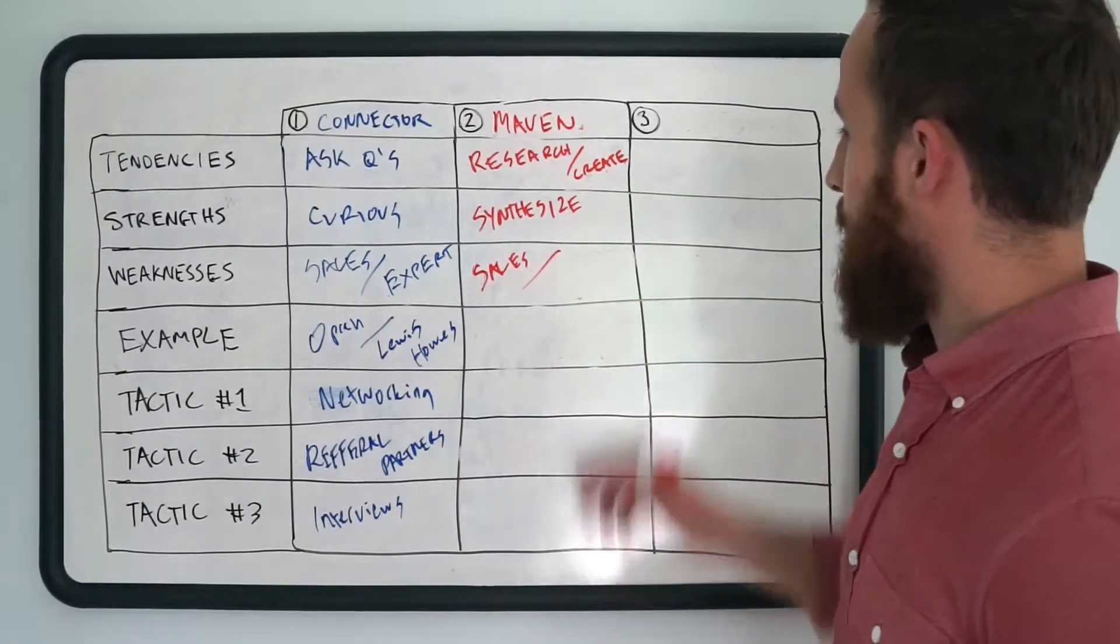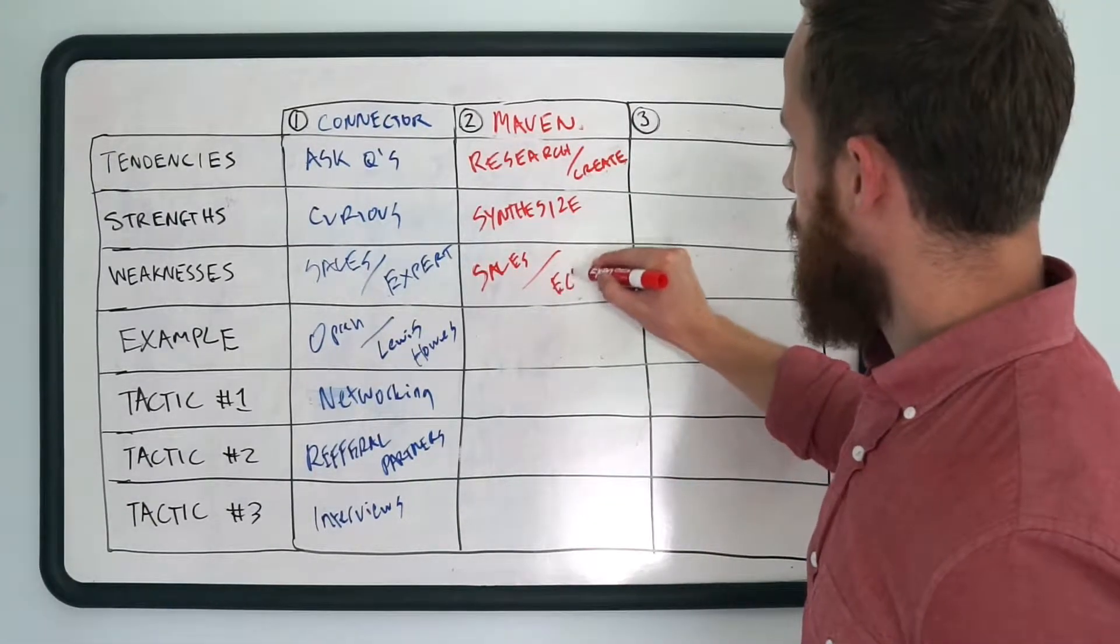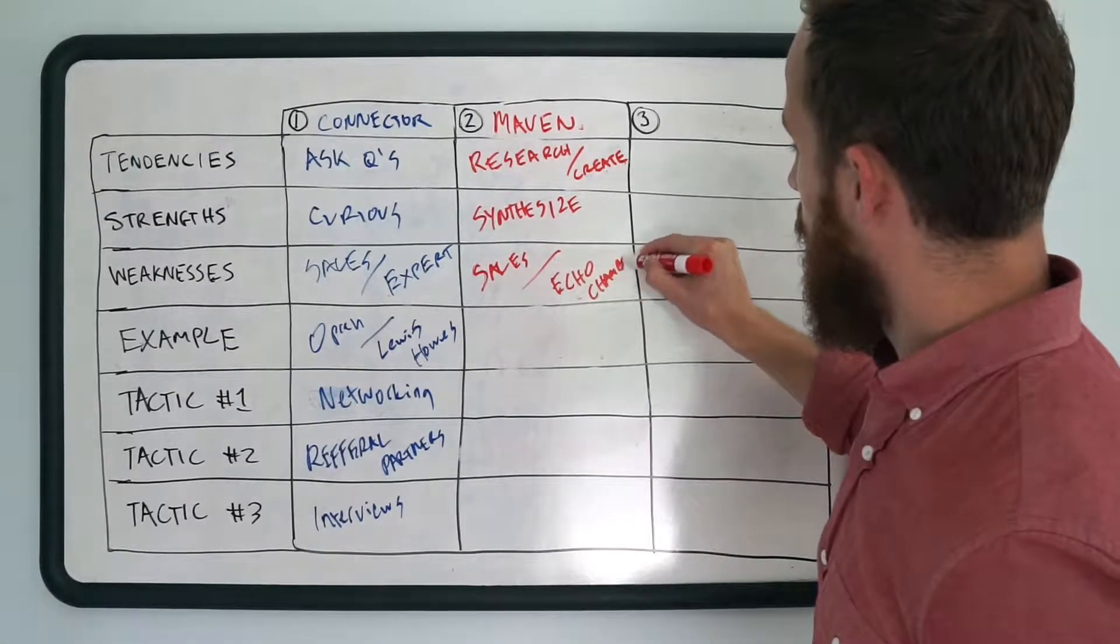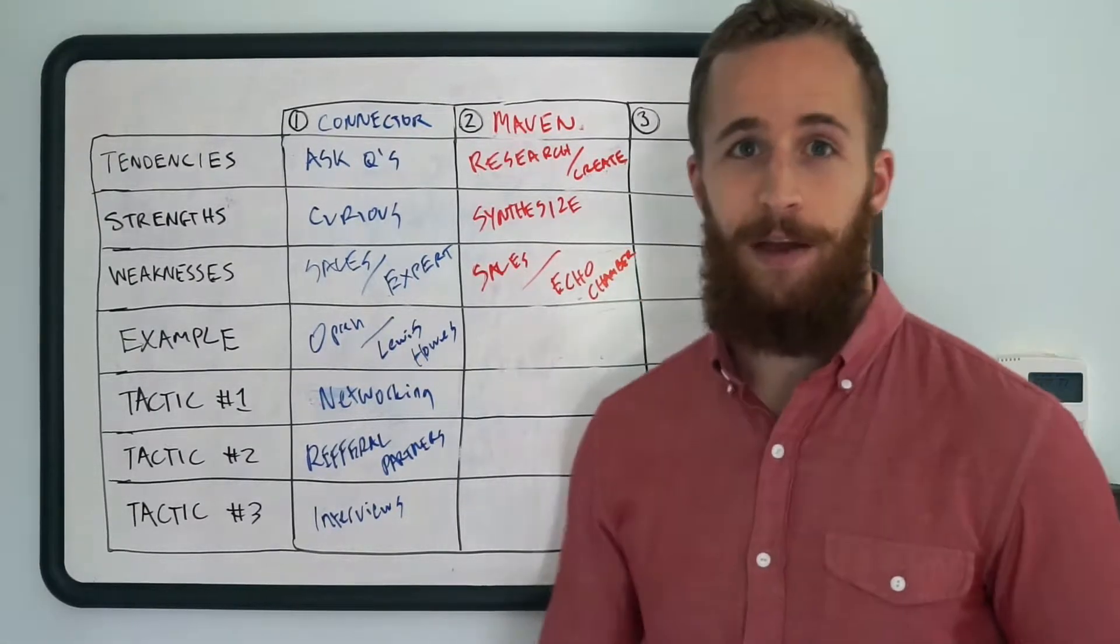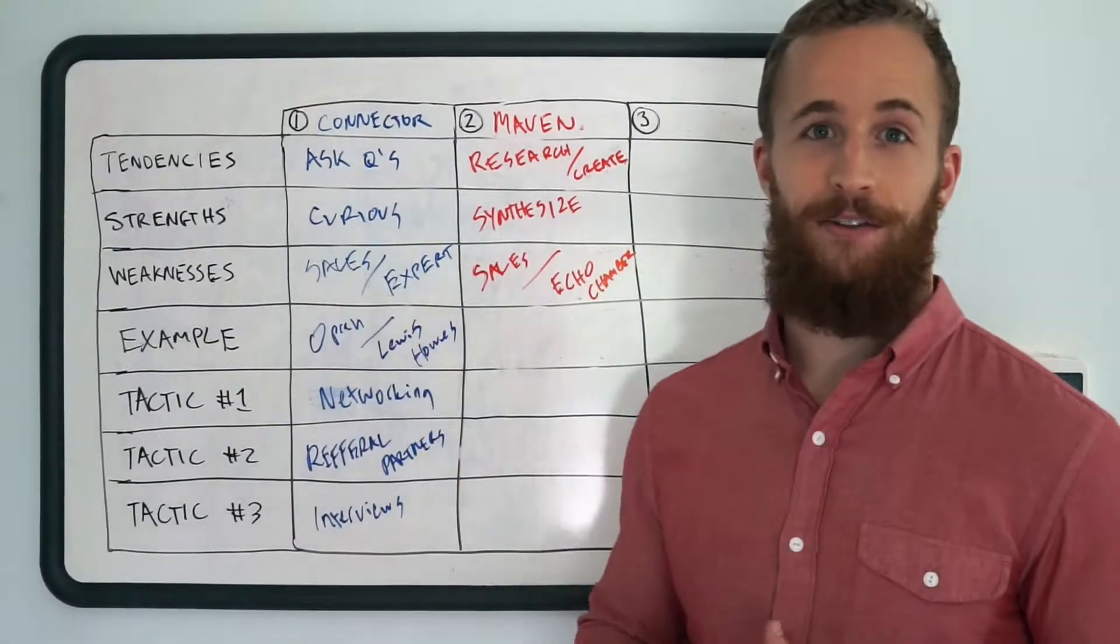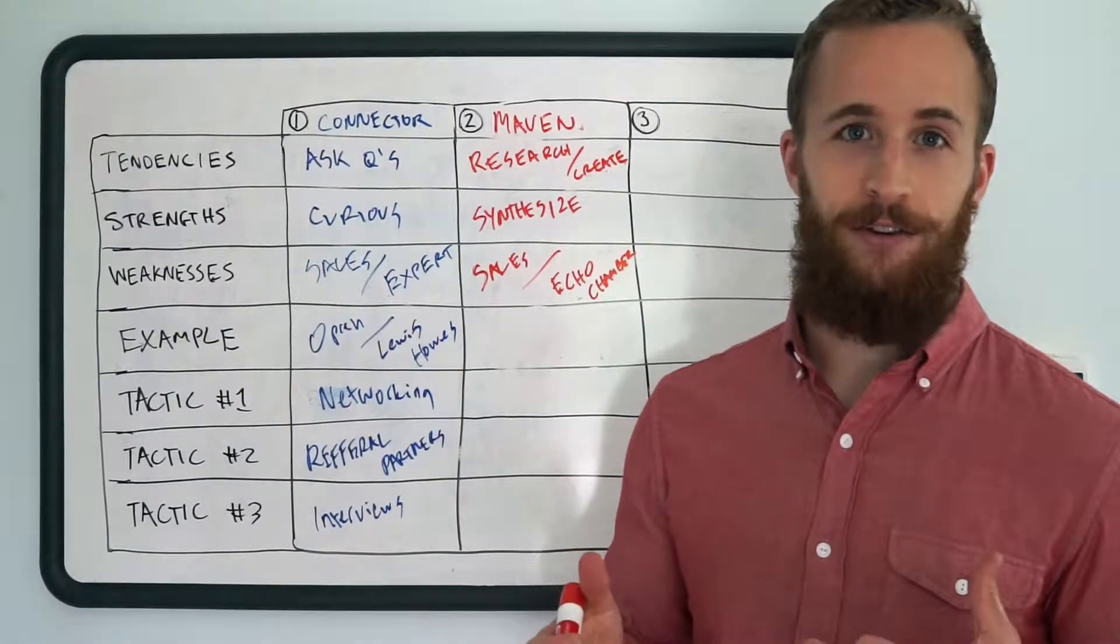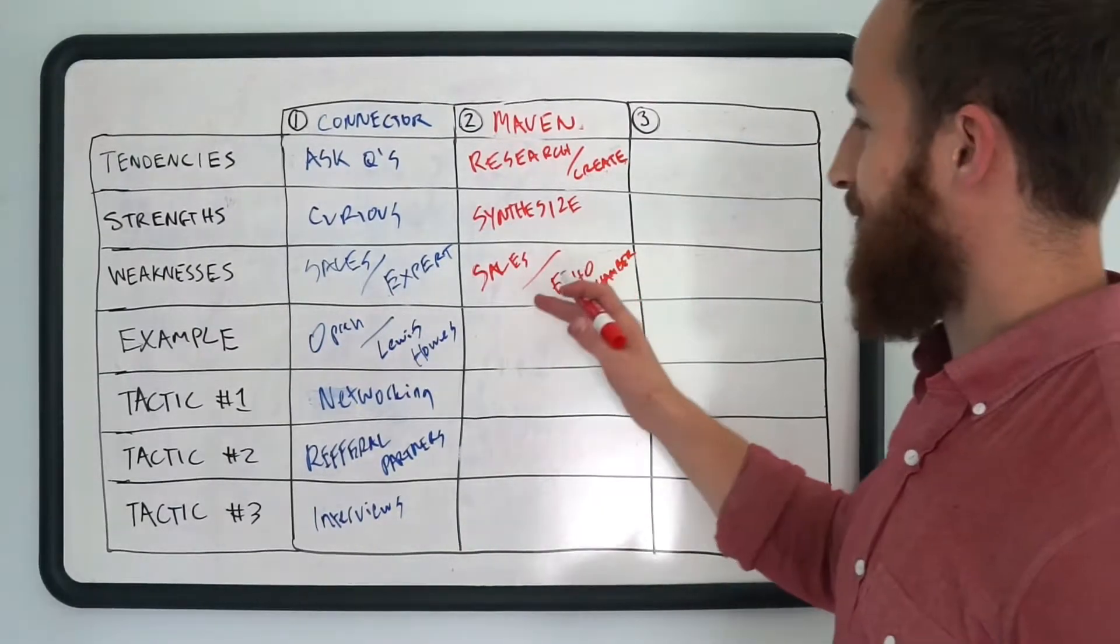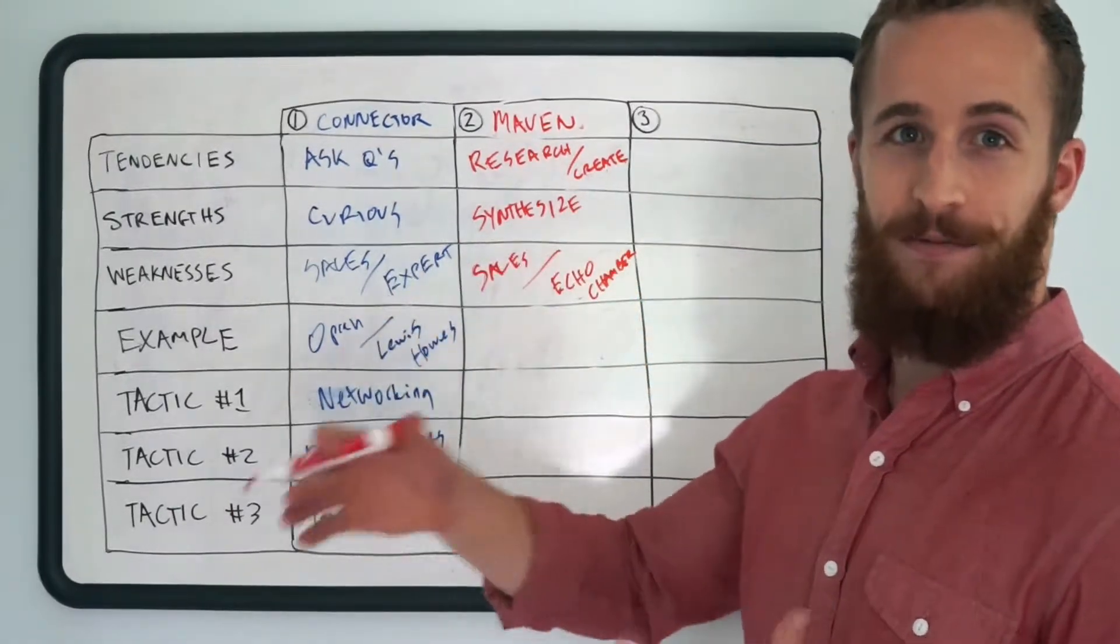Example, oh, another weakness of a maven is, I'm going to call it echo chamber. Meaning sometimes they don't connect with enough people and so they may be an expert but no one really knows what they do or that they even exist. Okay, so they need to also be able to connect with people, not just know the most.